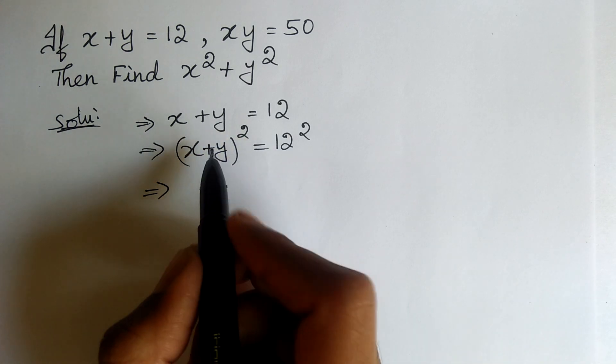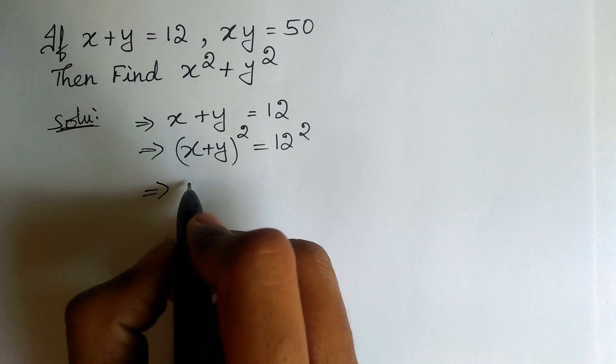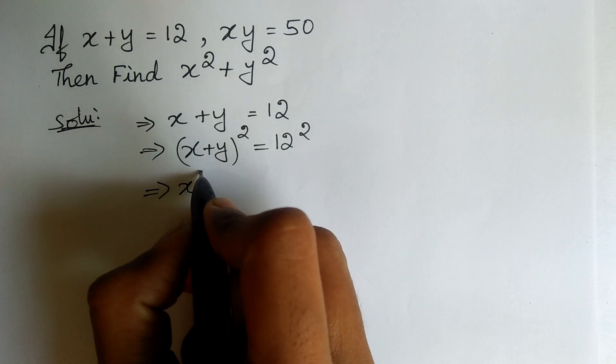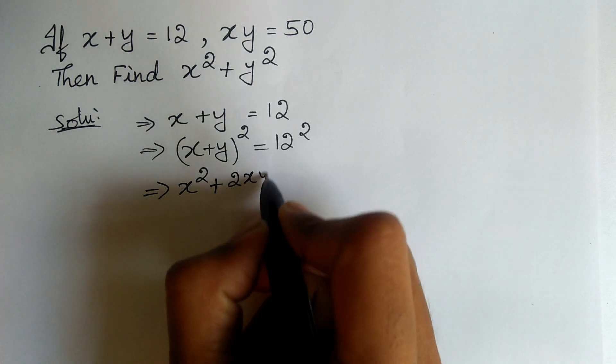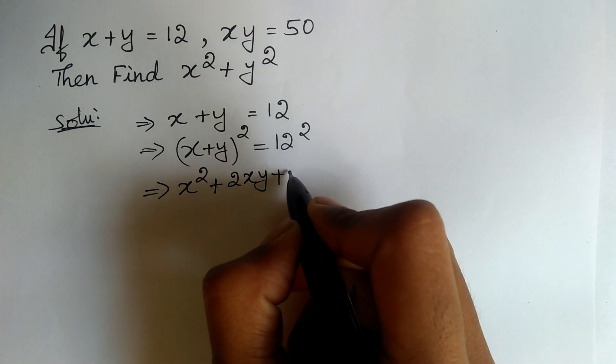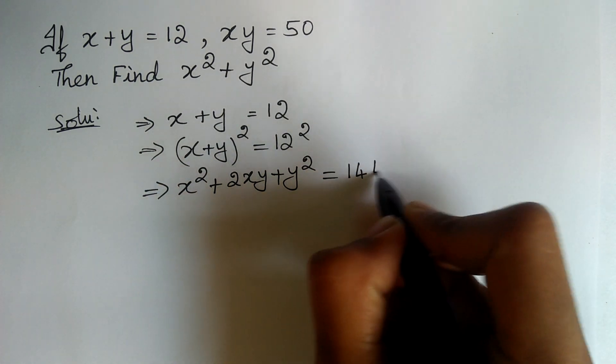a plus b the whole square. We can expand this using a plus b the whole square formula: a square, that is x square, plus 2ab, 2xy, plus b square, that is y square, is equal to 12 square. 12 square is equal to 144.